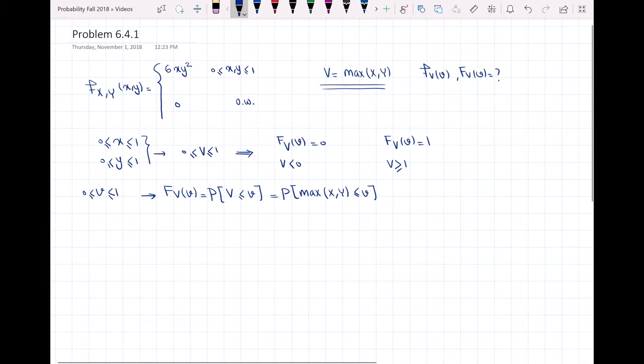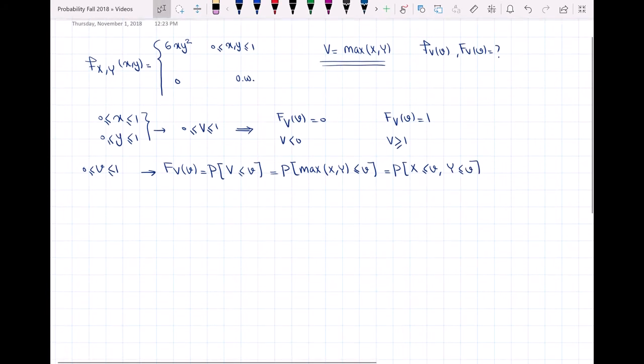When the maximum of X and Y is less than or equal to v, we know that both X and Y are less than or equal to v. Now I can use the PDF of X and Y to find this probability.